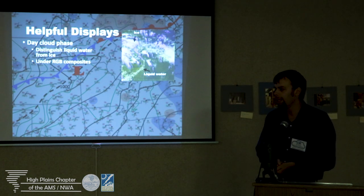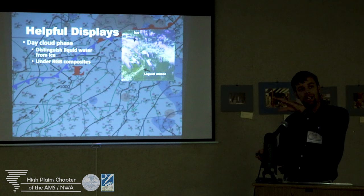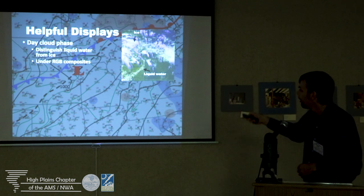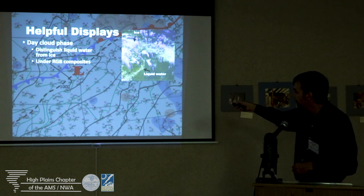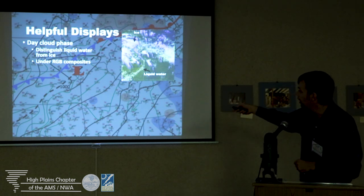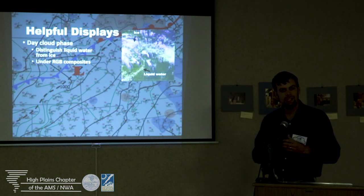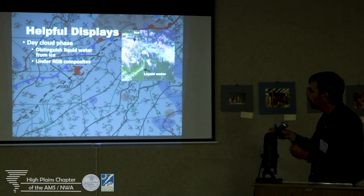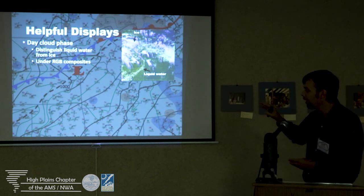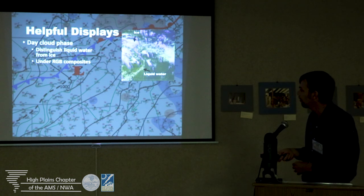Moving on to helpful displays. This one I've just started using since I got back — it's called 'Day Cloud Phase' in the satellite menu in AWIPS. Yellow colors indicate liquid water content in clouds, and the bluish-purple indicates more ice. This helps us distinguish ice from liquid water, which is extremely useful in wintertime. This time of year, it might help us know these clouds could be more susceptible to producing lightning than we might otherwise expect.